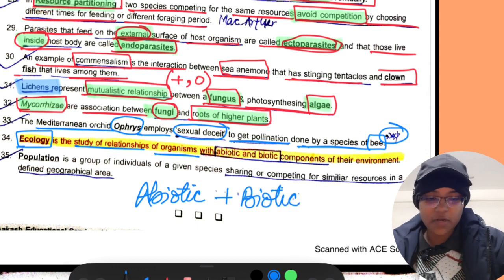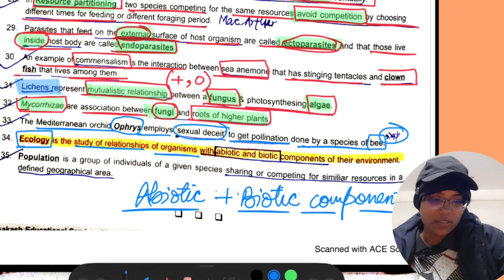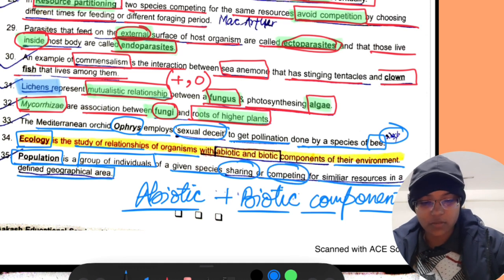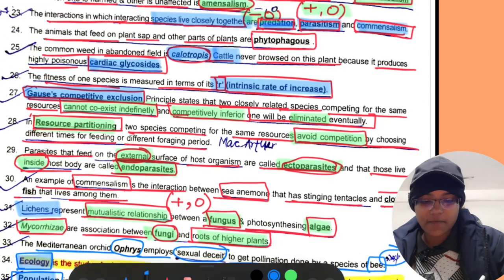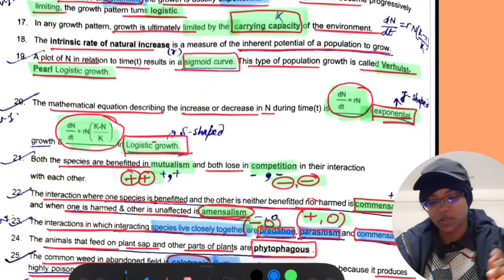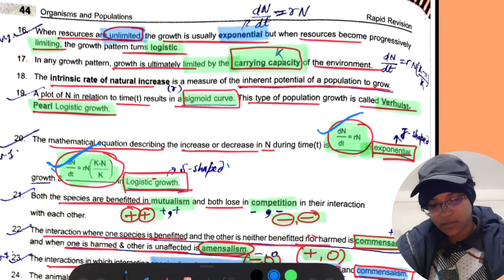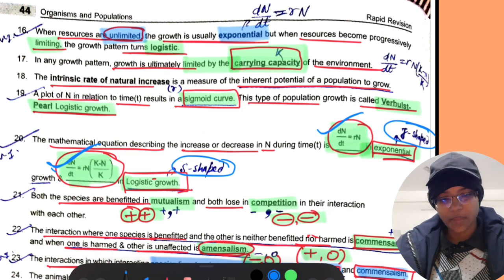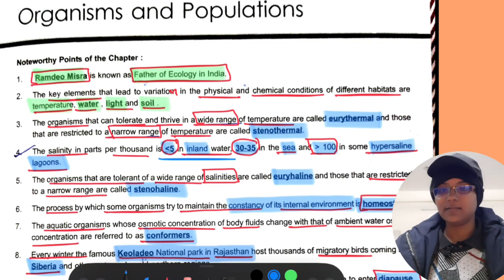Ecology is the study of relationship of organisms with biotic and abiotic components of their environment. Population is a group of individuals of a given species sharing or competing for similar resources in a defined geographical area. This is all about this chapter. I have highlighted the main points you should learn. S-shaped curve in the logistic growth and J-shaped curve in the exponential growth. Learn these values. I hope you like the session. Do like and subscribe to my channel.